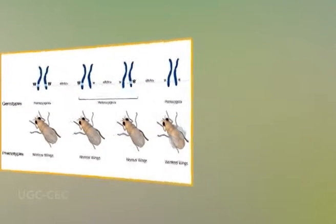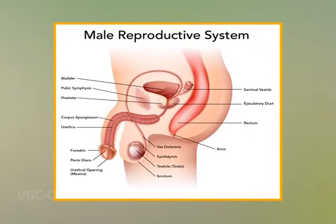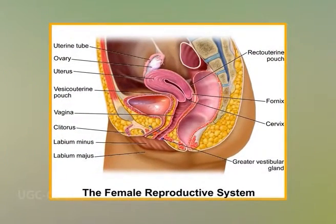The Y chromosome carries a gene that encodes a testes-determining factor. This factor organizes the gonad into testes rather than an ovary. Secondary sex determination affects the bodily phenotype outside the gonads. A male mammal has a penis, seminal vesicles and prostate gland. A female mammal has a vagina, cervix, uterus, oviducts and mammary glands. In many species, each sex has a sex-specific size, vocal cartilage and musculature. These secondary sex characteristics are usually determined by hormones secreted from the gonads.